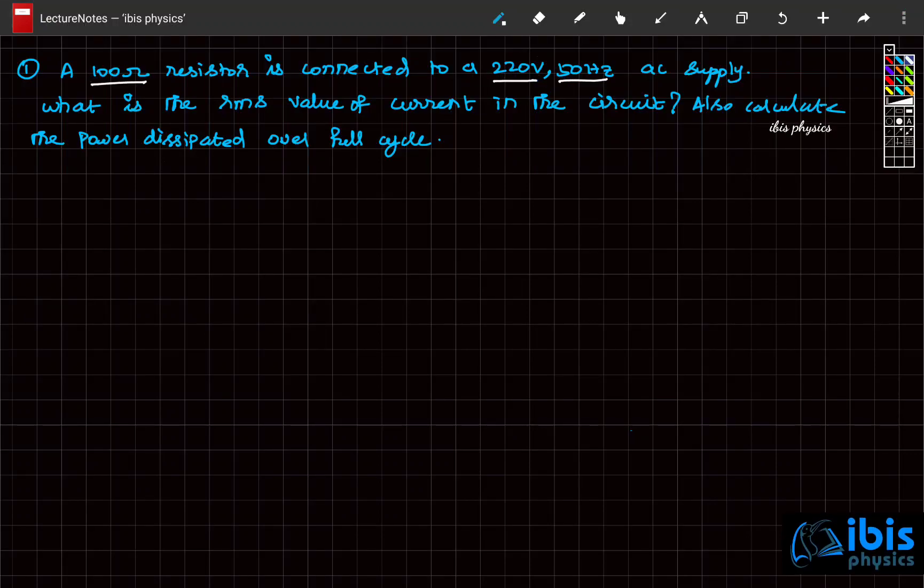Connected to a 220 volt, 50 Hertz AC supply, what is the RMS value of current? Also, calculate the power dissipated over a full cycle. Unless it is mentioned as peak voltage, the voltage given is actually RMS voltage, and this is the frequency of the circuit.